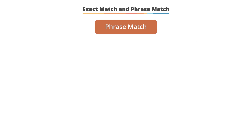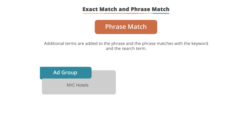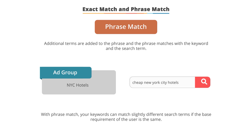Next, we have phrase match. With phrase match, Google matches similar to exact match, except that more words and concepts can be added to the phrase, assuming the initial phrase is in the search term. For example, with the term 'NYC hotels' using exact match, we could match to 'New York City hotels' or 'hotels in New York City.' But we probably wouldn't match to 'cheap New York City hotels' or 'last minute New York City hotel deals.' With phrase match, we would now match those concepts because the base idea, NYC hotels, is in the search term and the user can add more ideas.